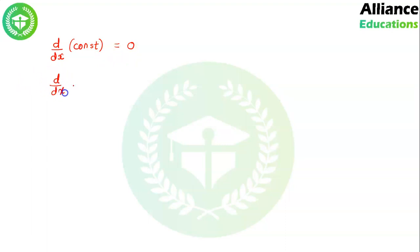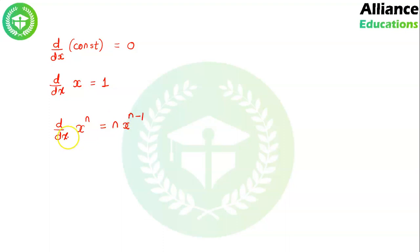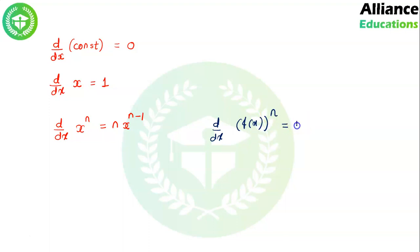Then, derivative of x is always 1 — d/dx of x is always equal to 1. Then, derivative of x^n is n·x^(n−1). If we are given x^n and need to find its derivative, it will be n·x^(n−1). But if there is a twist and we are given d/dx of some function f(x) raised to the power n, then the derivative will be n·f(x)^(n−1).